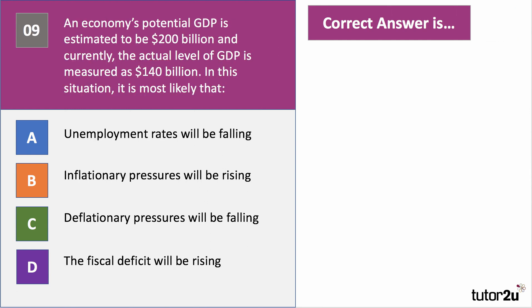Question nine. An economy's potential GDP is estimated to be £200 billion, and currently actual GDP is measured as £140 billion — actual GDP well below potential. In this situation, it is most likely that... Have a go at question nine. We're told the level of GDP is well below potential — in other words, the output gap, which is the difference between actual and potential GDP, is negative.